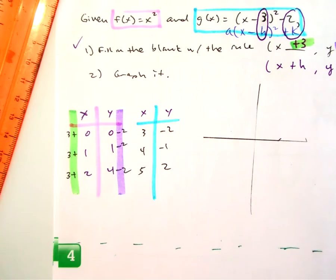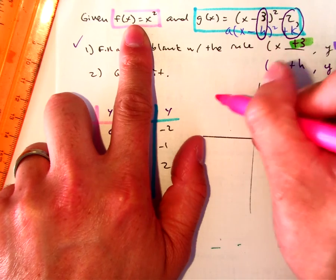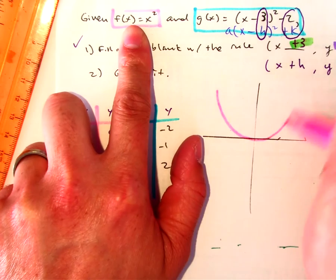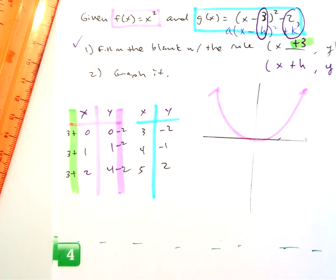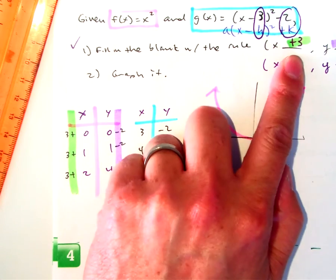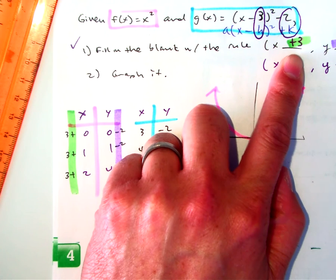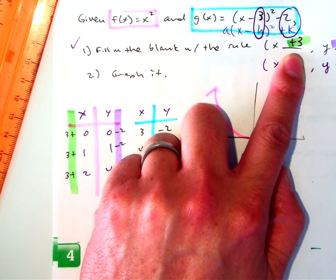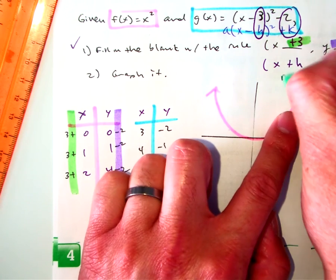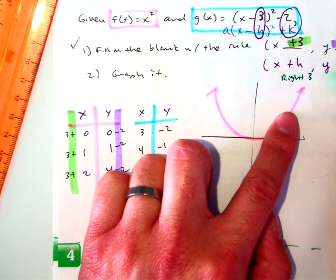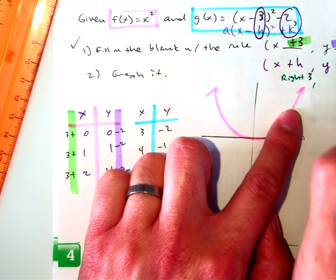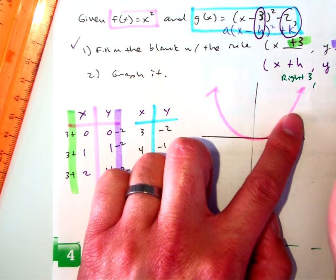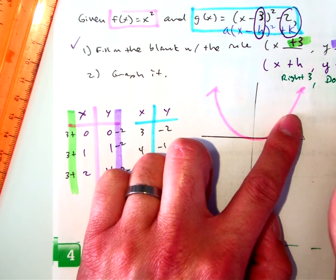The big idea you should get is the visual is your parent function. And class, what does a plus 3 mean? Right or left? Right 3. And what does a negative 2 mean on the y-axis? Down 2.